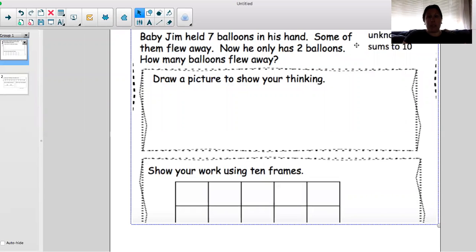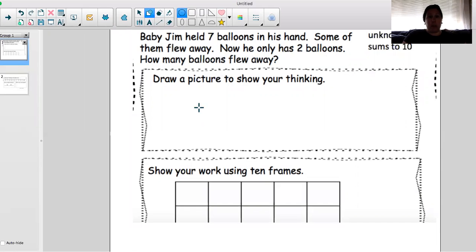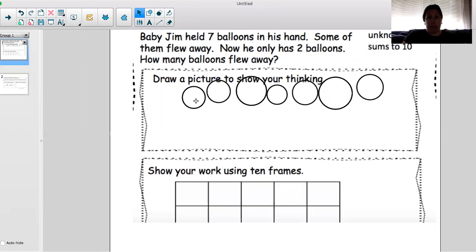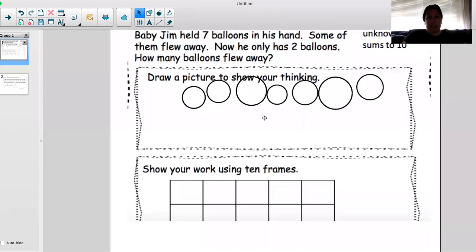So baby Jim had seven balloons in his hand. Some of them flew away. Now he only has two balloons. So let's draw it out. So he had seven balloons. One, two, three, four, five, six, seven. How many balloons did he have? He had seven balloons.